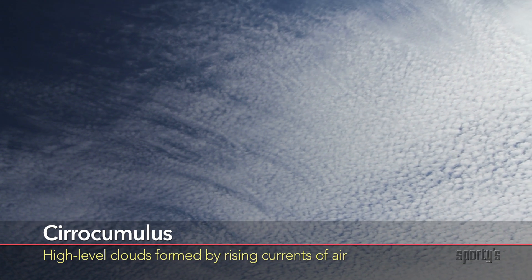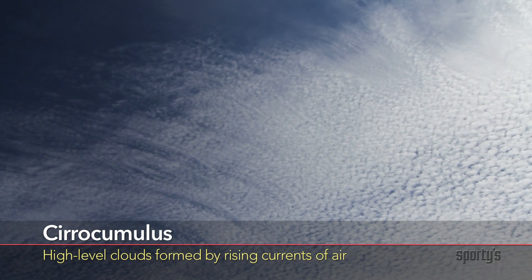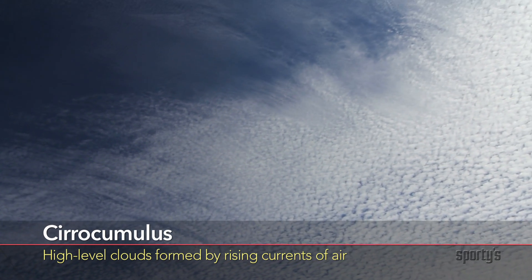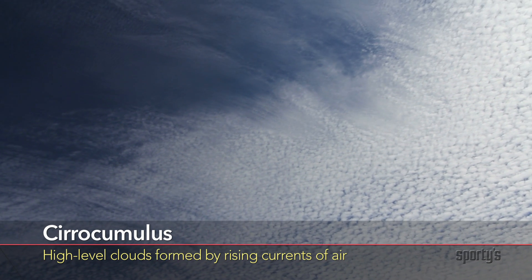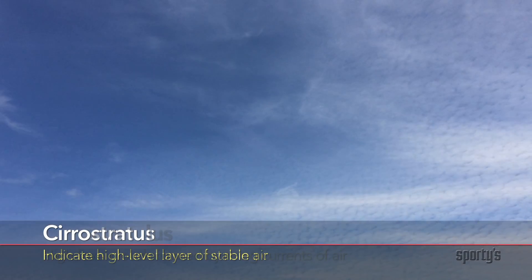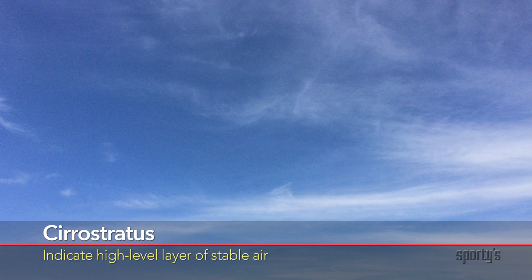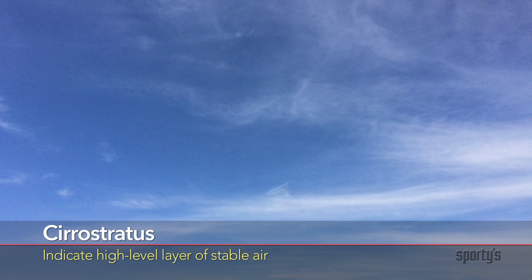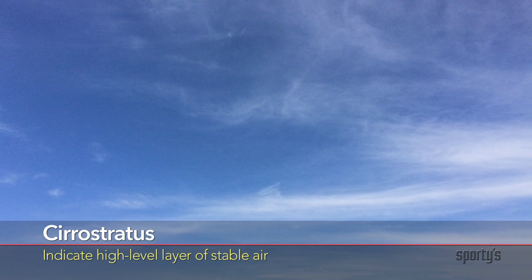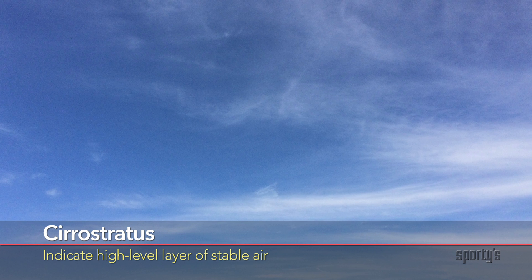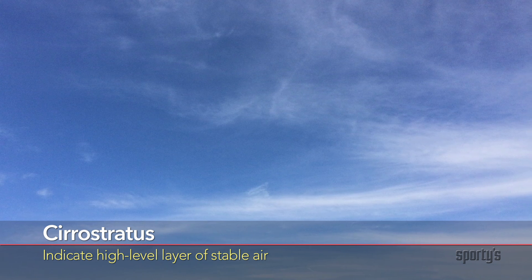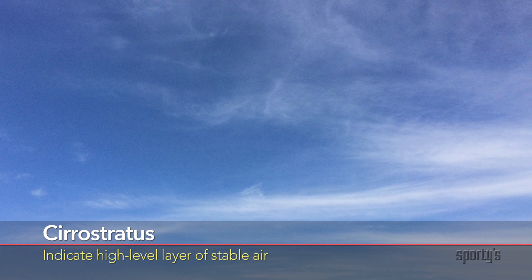Cirrocumulus clouds are high-level clouds formed by rising currents of air that cool as they rise. They look like puffy patches high in the sky. Cirrostratus clouds indicate a high-level layer of stable air cooled enough for clouds to form, and you'll often see cirrostratus as part of a uniform cloud layer high in the sky.